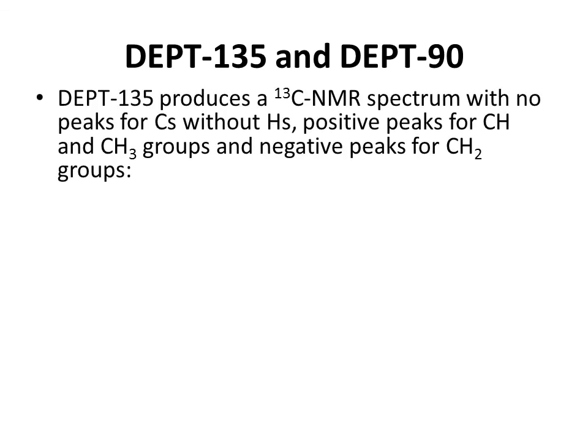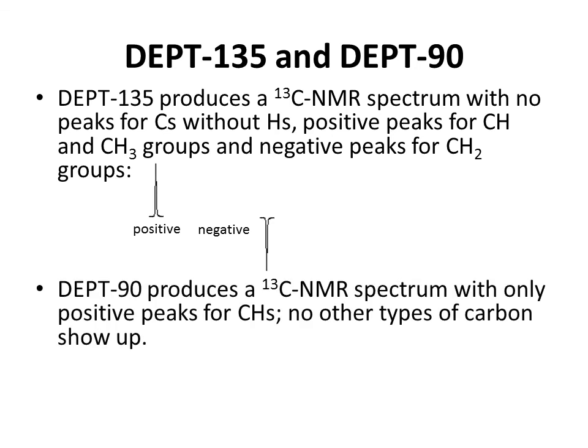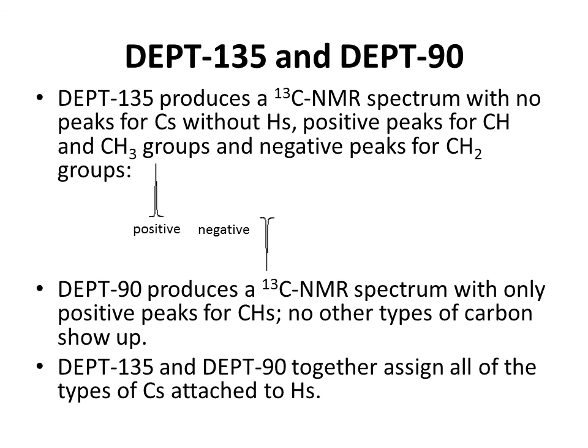DEPT-135 produces a carbon-13 NMR spectrum with no peaks for carbons without hydrogens, positive peaks for CH and CH3 groups (peaks pointing up above the axis), and negative peaks for CH2 groups (peaks pointing below the axis). DEPT-90 produces a carbon-13 NMR spectrum with only positive peaks for CH groups — no other types of carbons show up. When you combine DEPT-135 and DEPT-90 together with the original carbon-13 NMR spectrum, you can assign all types of carbons, including those with no protons attached, which appear in the carbon-13 spectrum but not in either DEPT spectrum.